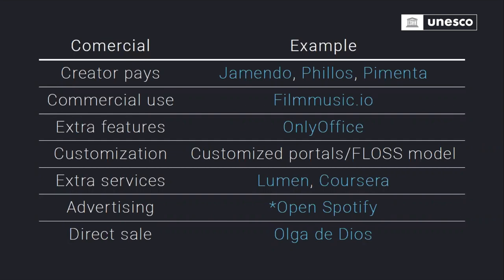Finally, direct sale is a model many publishers tried initially with mixed results. One successful example is author Olga de Dios from Spain, who has an incredible manifesto around publishing openly. Her high-quality books are available with an open license worldwide, and users pay for the print version — a model that is unsustainable for large publishers but works for small publications. This is a general overview of the commercial space providing financial sustainability for these services.